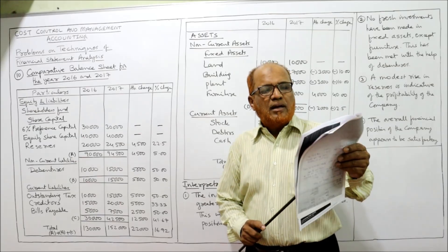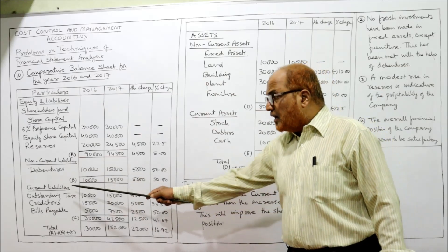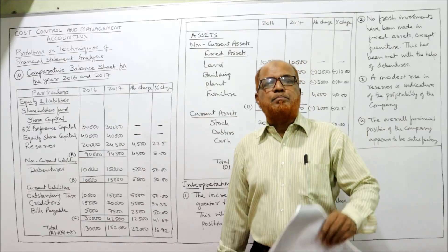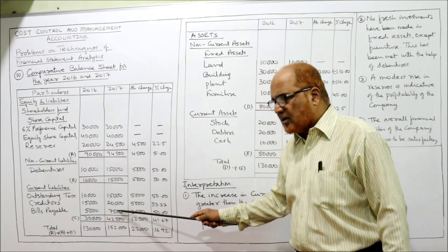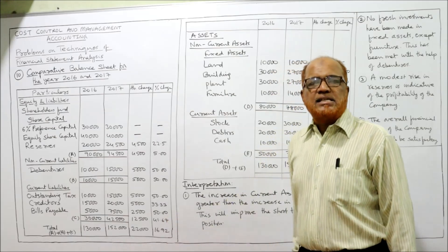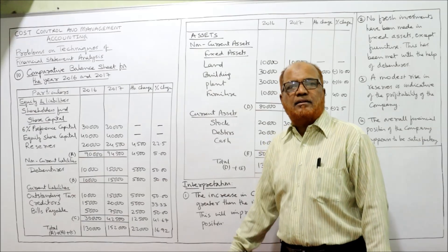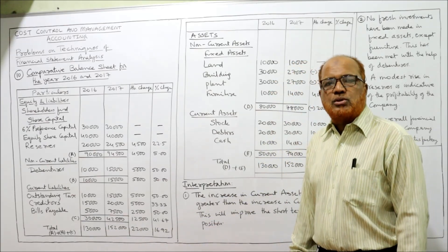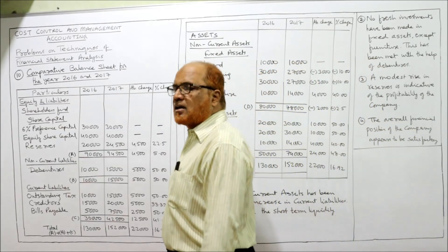Non-current liabilities: debentures are 10,000 last year and 15,000 current year. Current liabilities consist of three items: outstanding tax, creditors, and bills payable. A is shareholders fund, B is non-current liability, C is current liability. The total of A plus B plus C gives the total liabilities side: 1,30,000 last year and 1,50,000 current year.